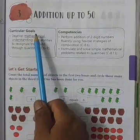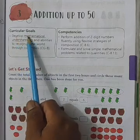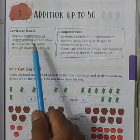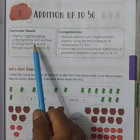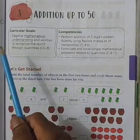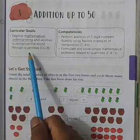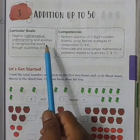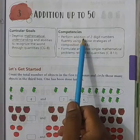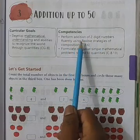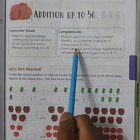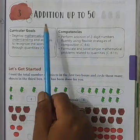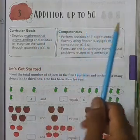Now, what are the curricular goals — that means what is the aim of this topic? To develop mathematical understanding and the ability to recognize the world through quantity — like how many trees are here, how many buses are here. We also need to perform the addition of two-digit numbers fluently using flexible strategies, and formulate and solve simple mathematical problems. In simple terms, we just have to learn addition up to 50.